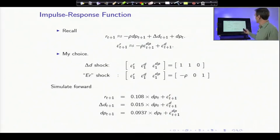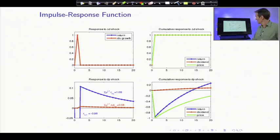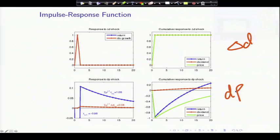So let's look at the pretty picture. Here is the pretty picture. So the top row is the dividend growth shock, and the bottom row is the dividend yield shock.